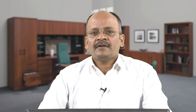We will be concentrating on the sugar industry today. Sugar is extracted generally around the world from different raw materials — sugarcane and beet are the two common materials from which sugar is made. While both these raw materials produce identical refined sugar, sugarcane is grown in semi-tropical regions and accounts for around two-thirds of world sugar production, while beet is grown in temperate climates and accounts for the remaining one-third. In India, sugarcane is the raw material from which sugar is produced.